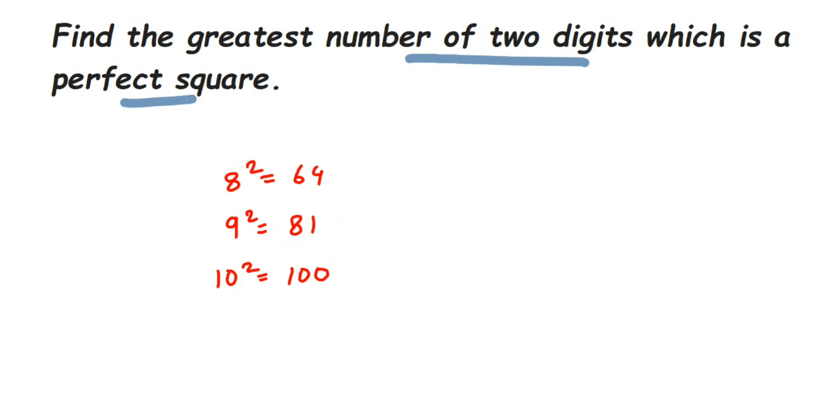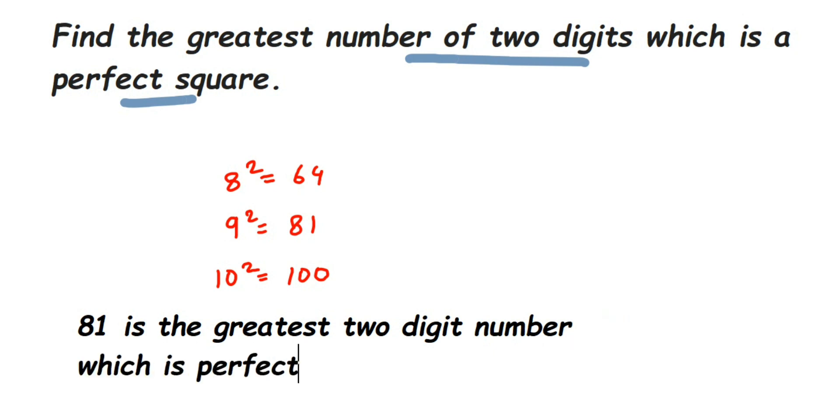Let us conclude the answer. Therefore, 81 is the greatest two-digit number which is a perfect square. I hope this question is clear.